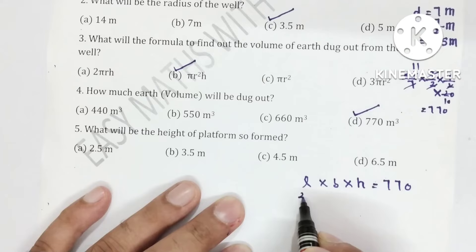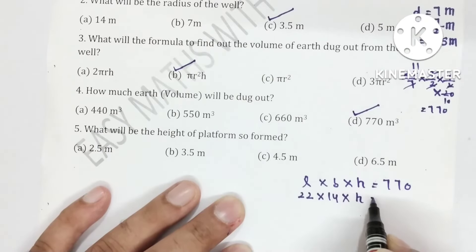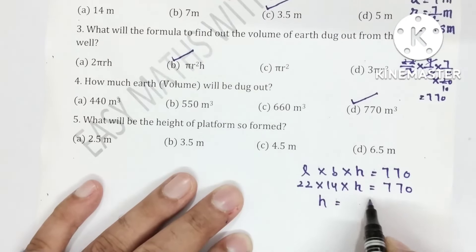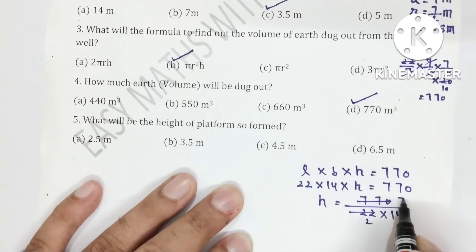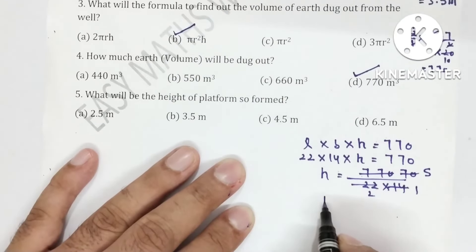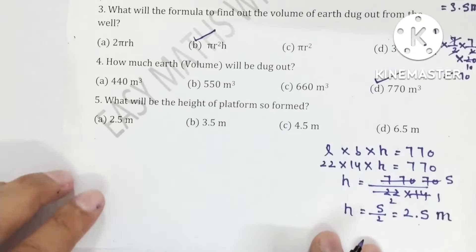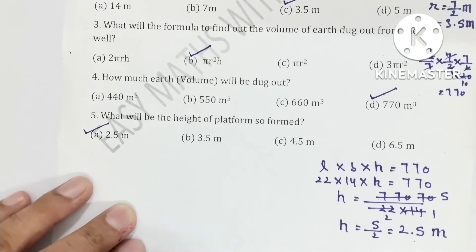For the height of the rectangular platform: the volume of earth equals length × breadth × height. The length is 22 meters, the breadth is 14 meters, and setting this equal to 770, we solve: h = 770 ÷ (22 × 14). Working through the division: 770 ÷ 308 gives h = 5/2, which equals 2.5 meters. So the answer is 2.5 meters.